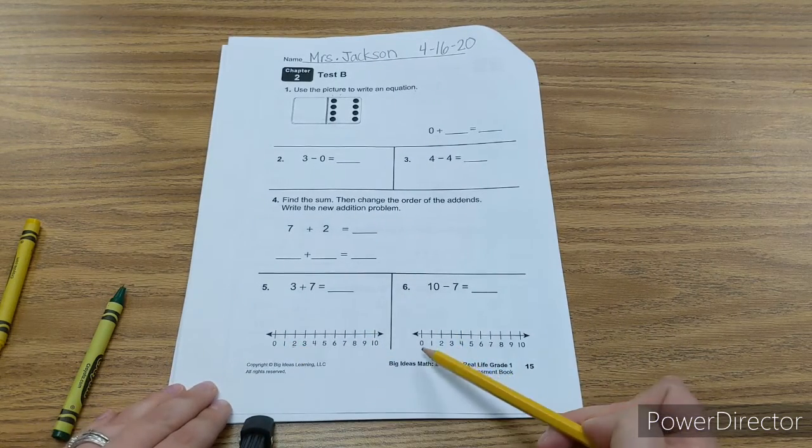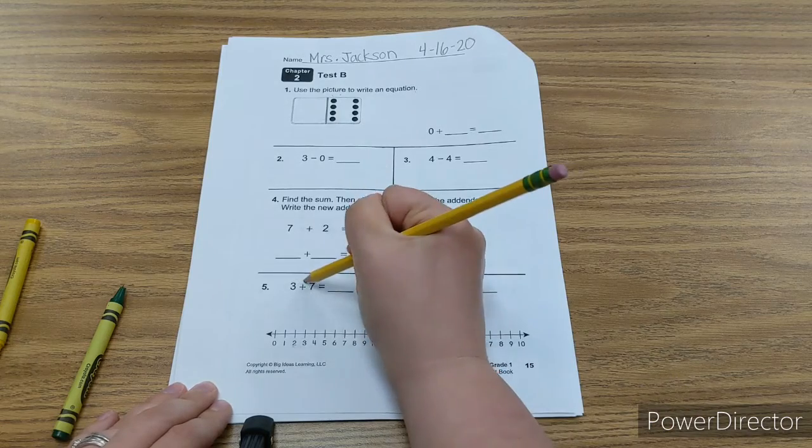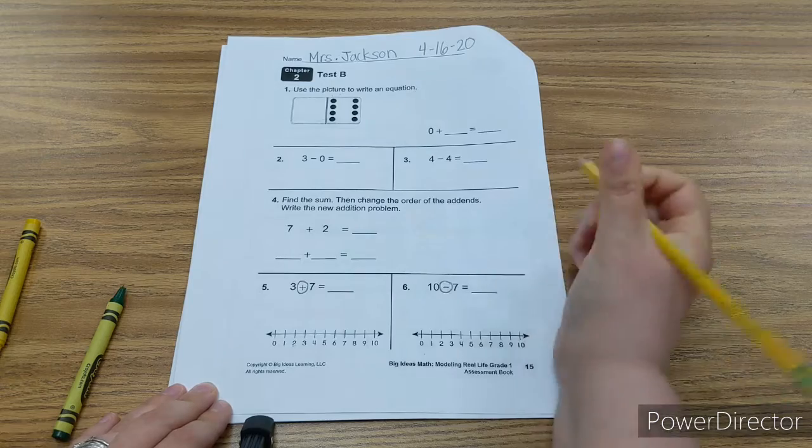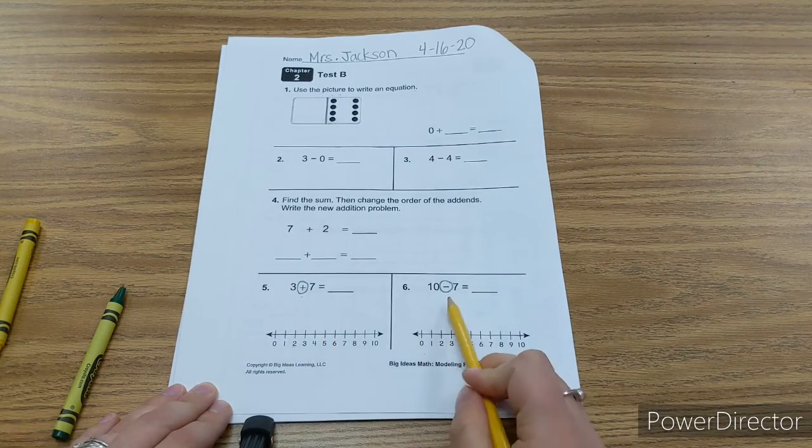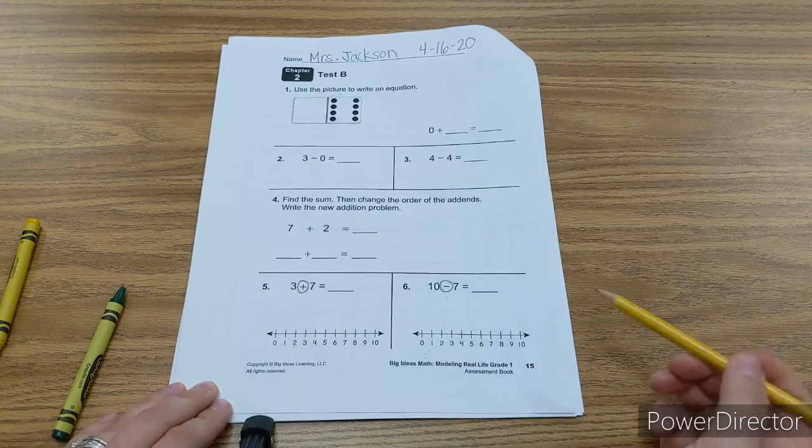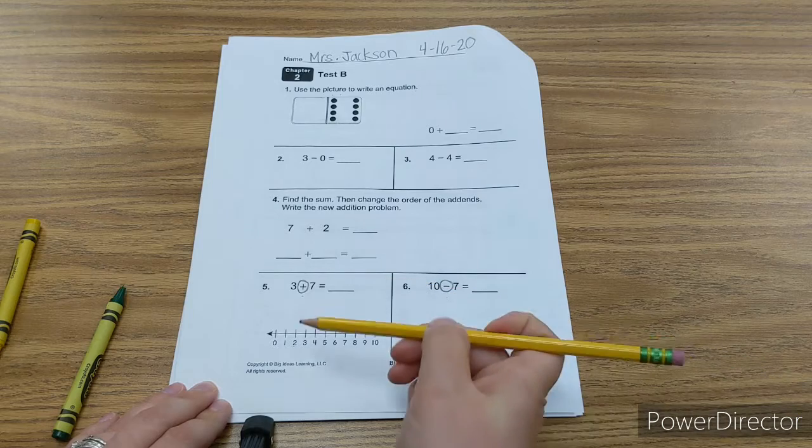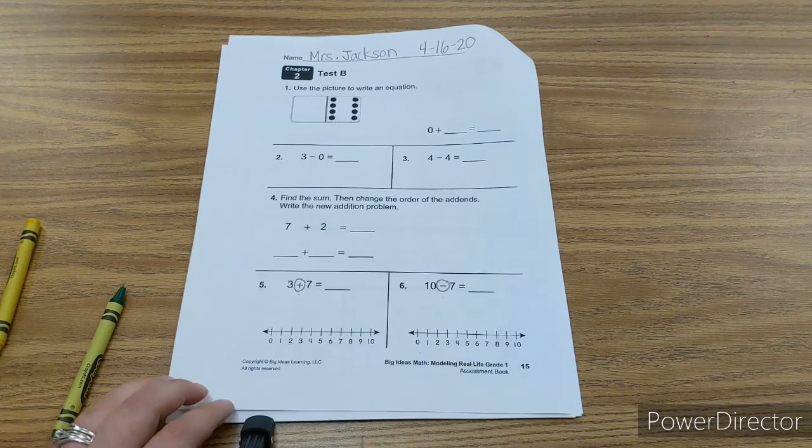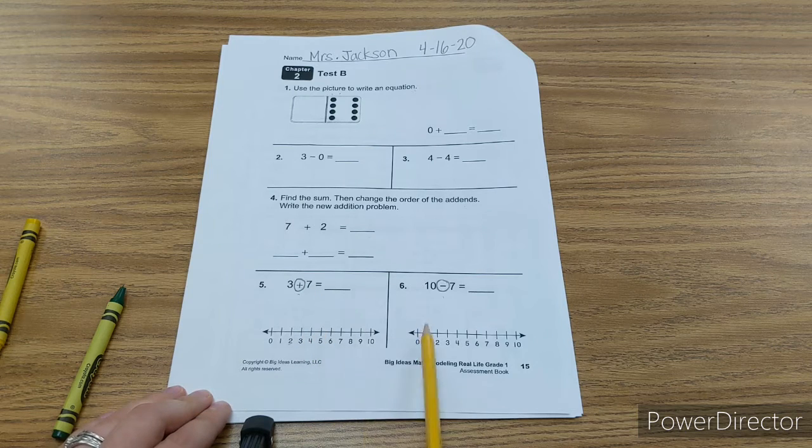So for five and for six, make sure you're checking which way you need to go on your line. One is an addition problem, one is a subtraction problem. Subtraction, you hop backwards. Addition, you hop forwards. Use your number line to help you with your answers.